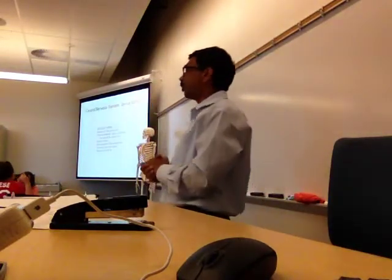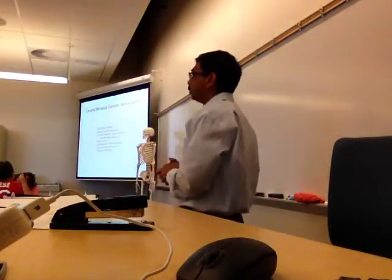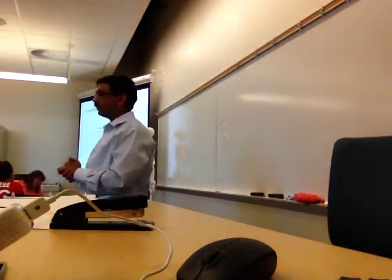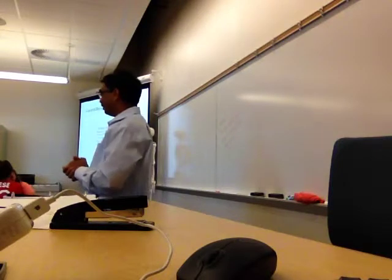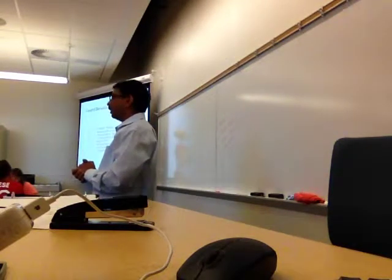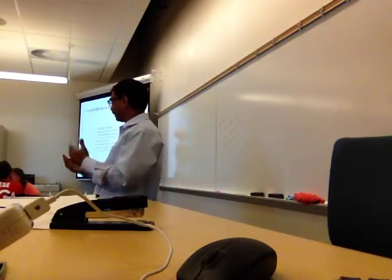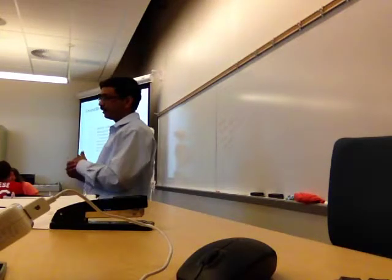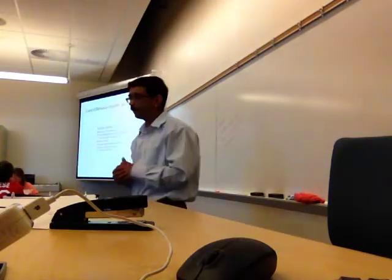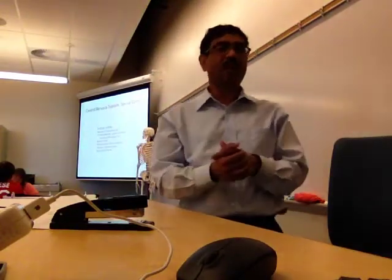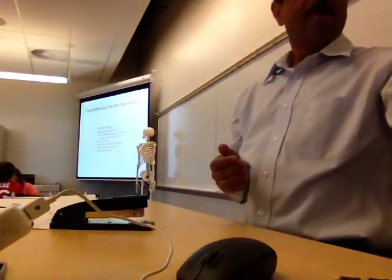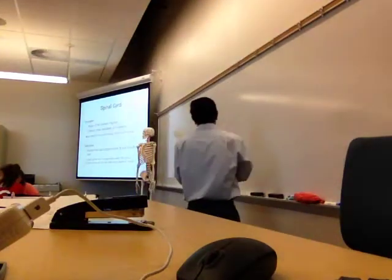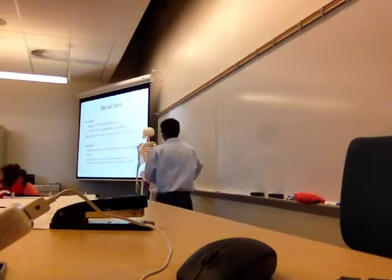Then we'll talk about spinal cord trauma — injury to the spinal cord. It is very common. In the United States, a lot of motor accidents and car accidents occur, and spinal cord trauma is very common. So first, the anatomy of the spinal cord — location.